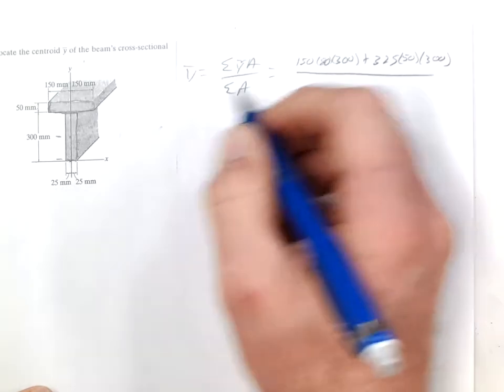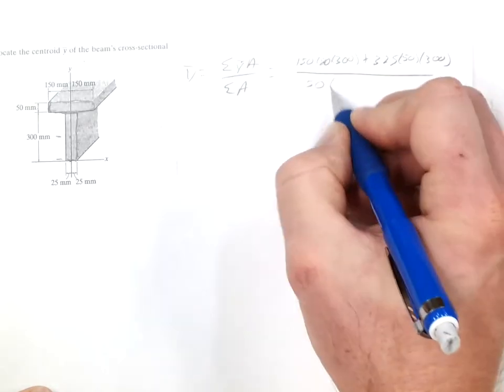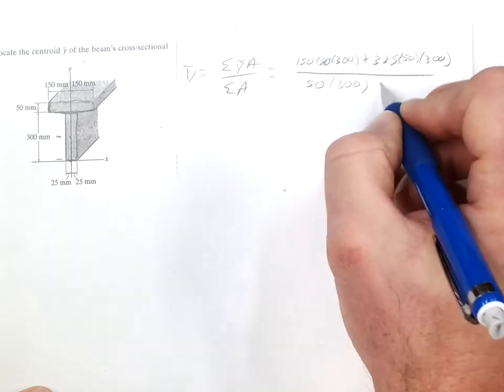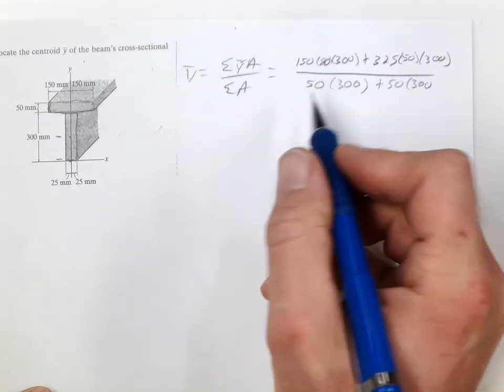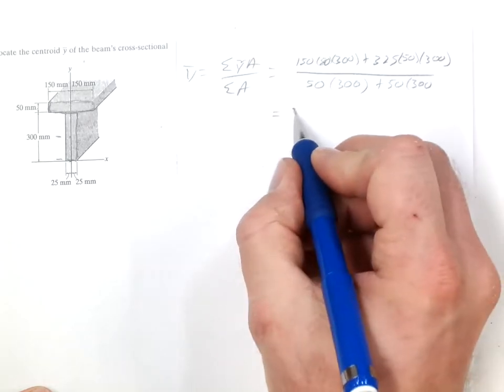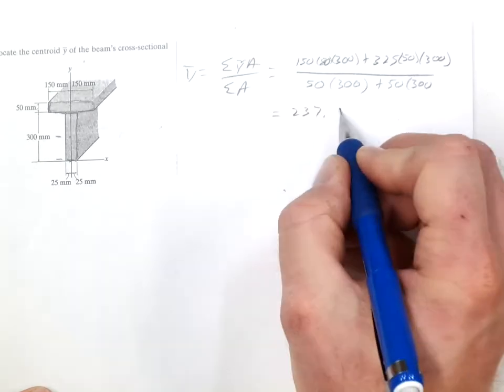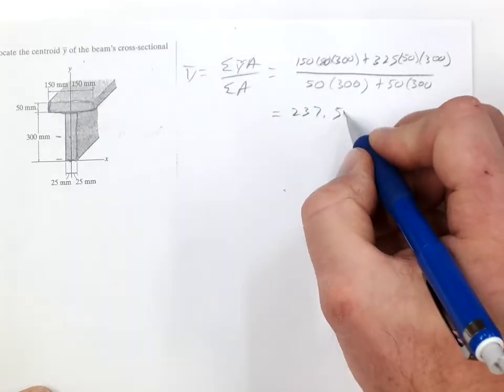And then the area of both of those is 50 times 300. Summing all that up and we get 237.5. And that's going to be millimeters.